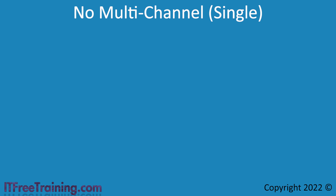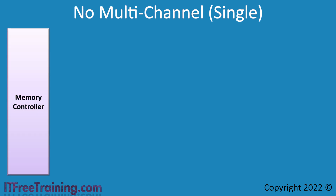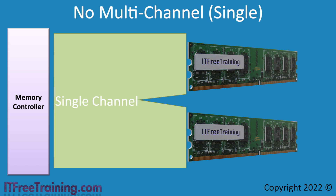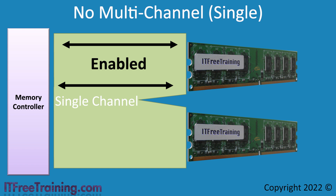To understand how multi-channel works, I will first look at what occurs when it is not used. Consider that you have a memory controller, either inside the CPU or on its own chip, and inside the computer there are two memory modules. Without dual-channel enabled, the memory controller shares the access path with both memory modules, which essentially means it can only access one memory module at a time.